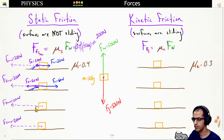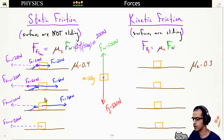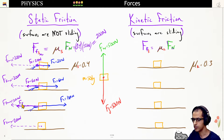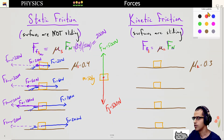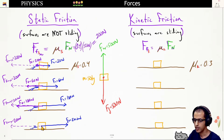Increasing the applied force to 180 newtons means we're close to the maximum static friction, but the box will still not slide because it's less than 200 newtons — so the force of friction is 180 newtons. Only when the person applies a force equal to or greater than that maximum value will the box begin to slide. Applying 200 newtons causes the box to begin sliding, and friction transitions to kinetic friction.